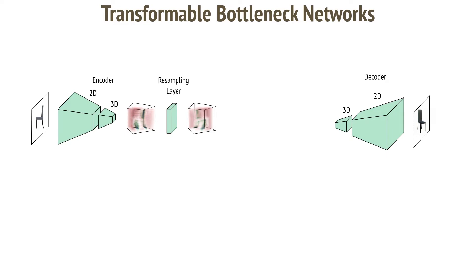The encoder in our network takes a single color image as input and extracts a volumetric representation of the content in the bottleneck layer. Each cell in the volume contains a feature vector with information describing the local content and structure portrayed in the image. We train the network to extract this representation by rigidly transforming and resampling it in a manner that corresponds to different viewpoints of the subject, then decode the representation to synthesize new images.